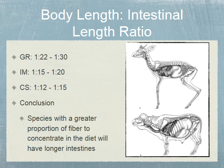Next, body length to intestinal length ratio: grazers have a greater ratio of body length to intestinal length, while concentrate selectors have the smallest. Species with a greater proportion of fiber to concentrate in their diet will have longer intestines. We would expect an ox to have longer intestines as a percentage of body length compared to a concentrate selector, because the grazer's diet has more fiber that needs to be absorbed.